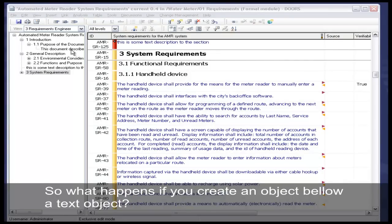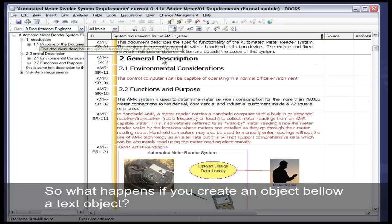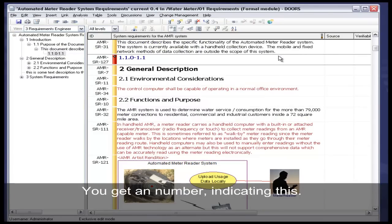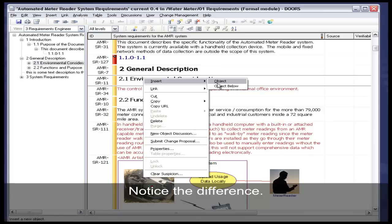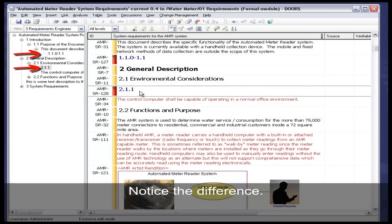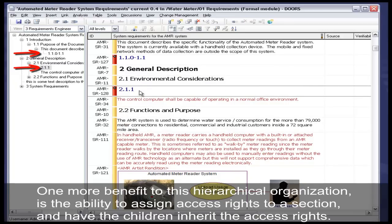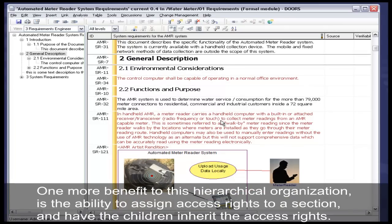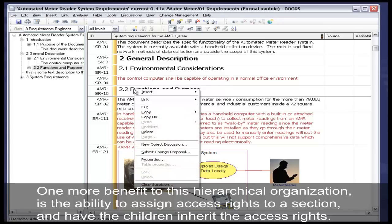So what happens if you create an object below a text object? You get a number indicating this. Notice the difference. One more benefit to this hierarchical organization is the ability to assign access rights to a section and have the children inherit these access rights.